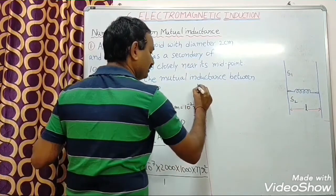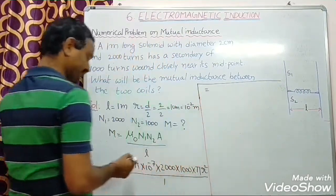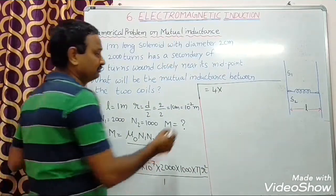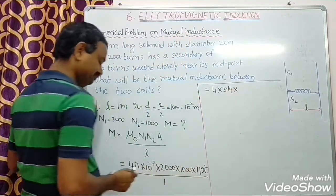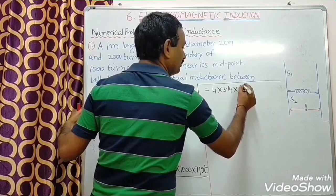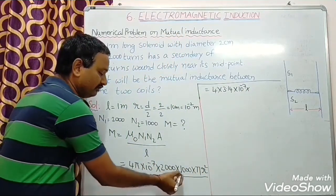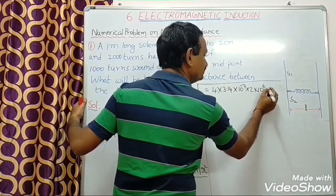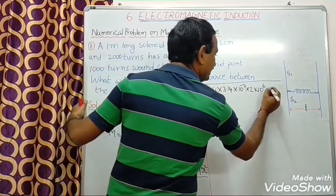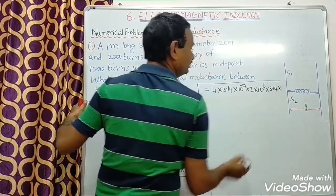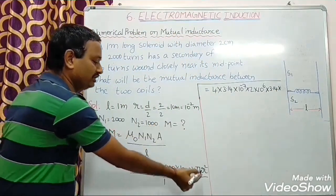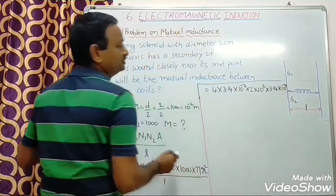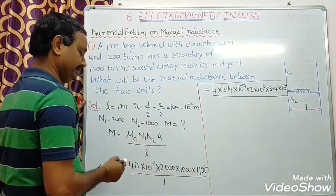So, that is equal to 4π, and instead of π I will write 3.14, into 10 power minus 7, into 2000 into 1000, which I write as 2 into 10 power 6, into 3.14 into R square. R is 10 power minus 2, so R square is 10 power minus 4. Divided by L equal to 1.